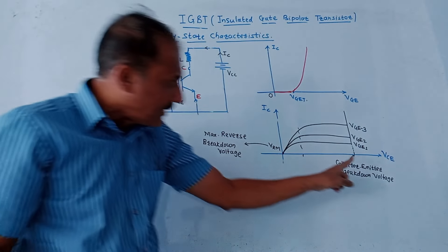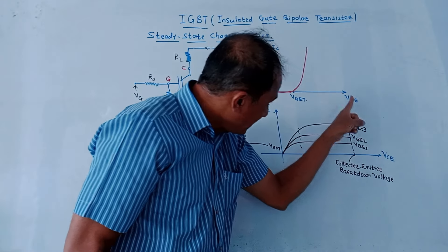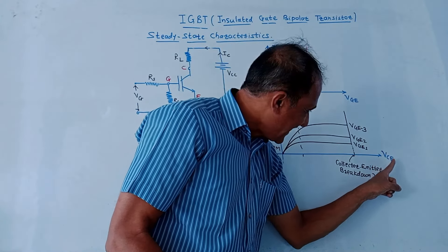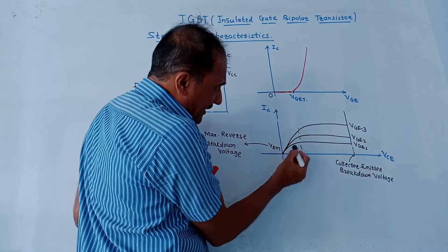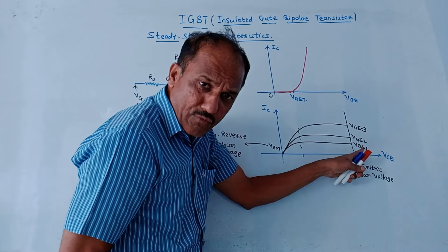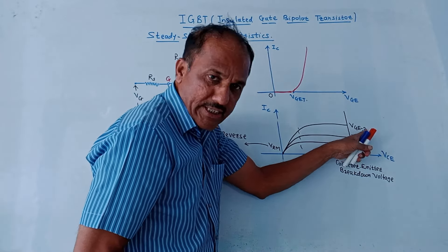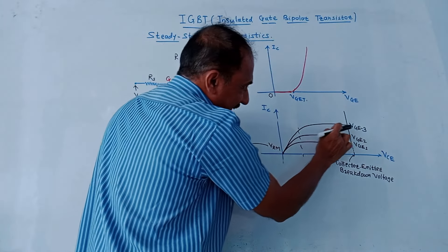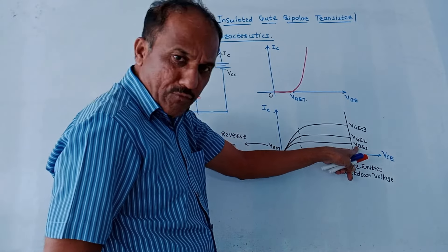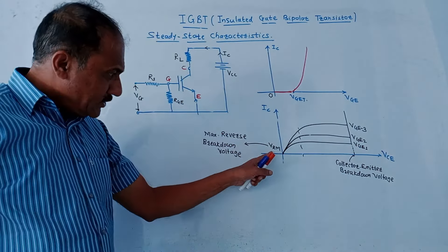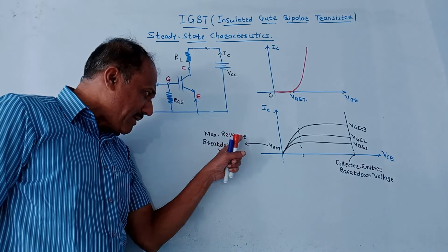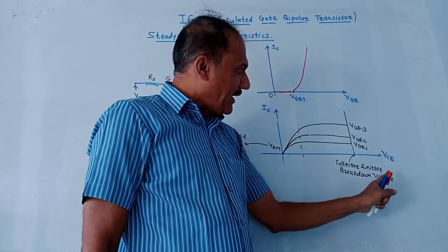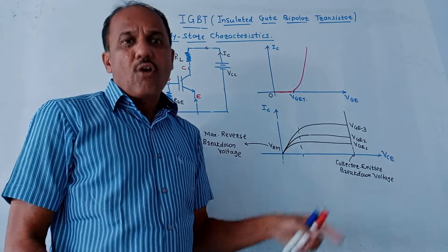Next is the output characteristic — a graph of IC (collector current) versus VCE (collector-to-emitter voltage), drawn for different values of VGE: VGE1, VGE2, VGE3, and so on. After a particular value of VCE, the collector current IC remains constant irrespective of VGE. One point marked is VREM, indicating maximum reverse breakdown voltage. The level at which the device breaks down is called the collector-emitter breakdown voltage.